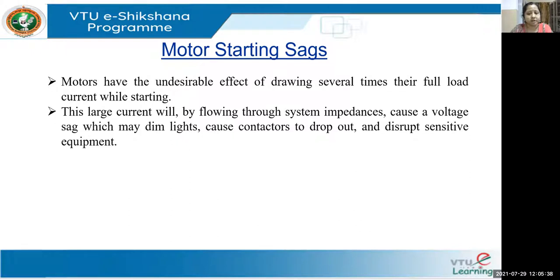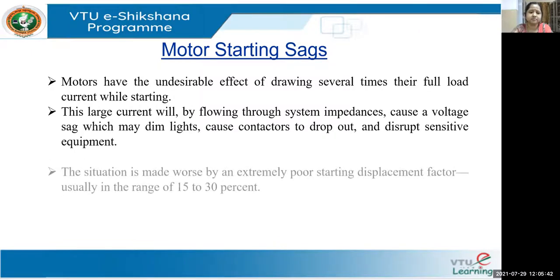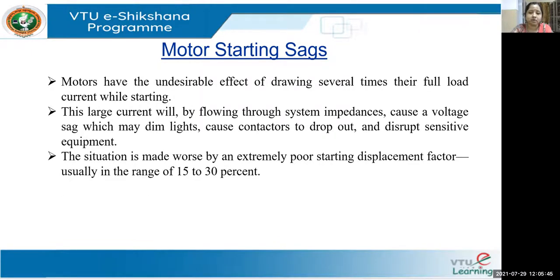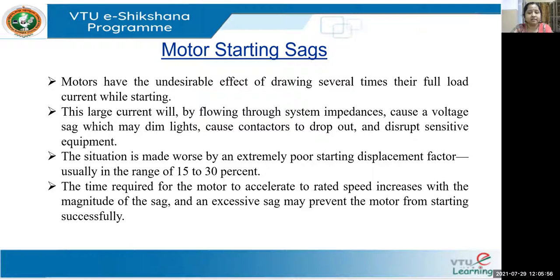The voltage dip causes contactors to drop out and disrupts sensitive equipment. The situation is made worse by an extremely poor starting displacement factor, which is usually in the range of 15 to 30%. The time required for the motor to come back to its original speed depends on motor to motor, and the time required for the motor to accelerate to rated speed increases with the magnitude of sag — it depends on both the intensity and duration of the sag. Excessive sag may prevent the motor from even starting successfully.